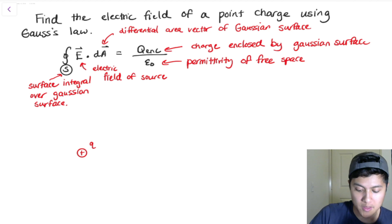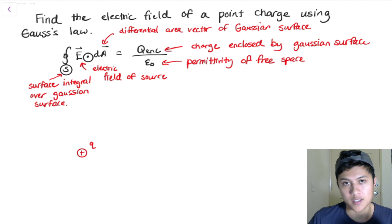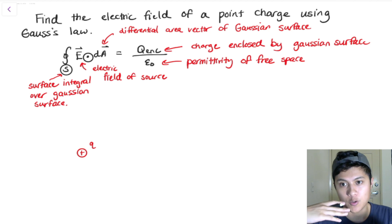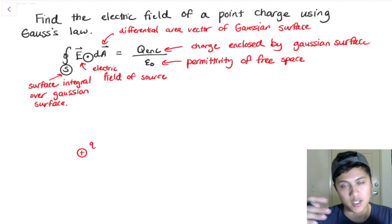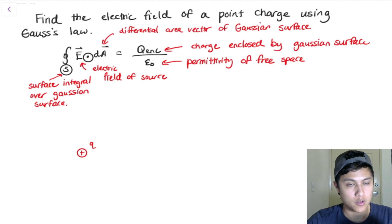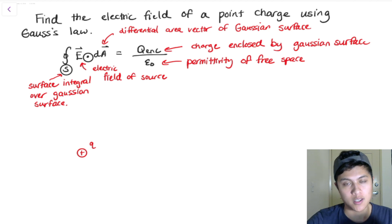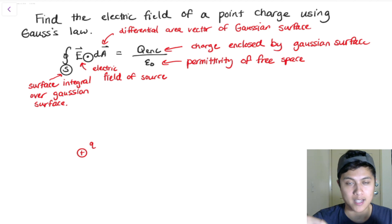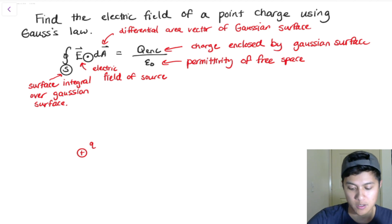The dot product E·dA means we are going to find the flux — the flux of the electric field through our Gaussian surface. We can think of it as just the amount of arrows passing through the surface of our Gaussian surface.